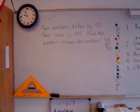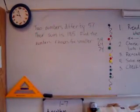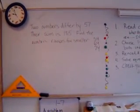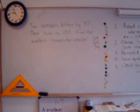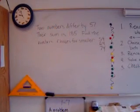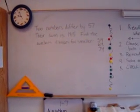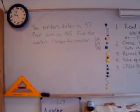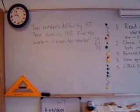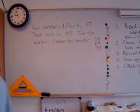Here's our problem: two numbers differ by 57. Their sum is 185. Find the numbers.